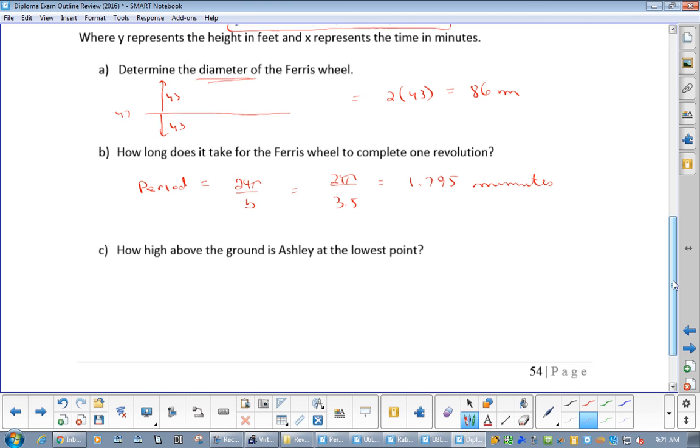Now how high above the ground is Ashley at the lowest point? So at the lowest point, well, we got 43, or 47 minus 43. So at the lowest point it would be 4 meters. And how did I know? I guess I'll back up. How did I know this is minutes? This time is in minutes.